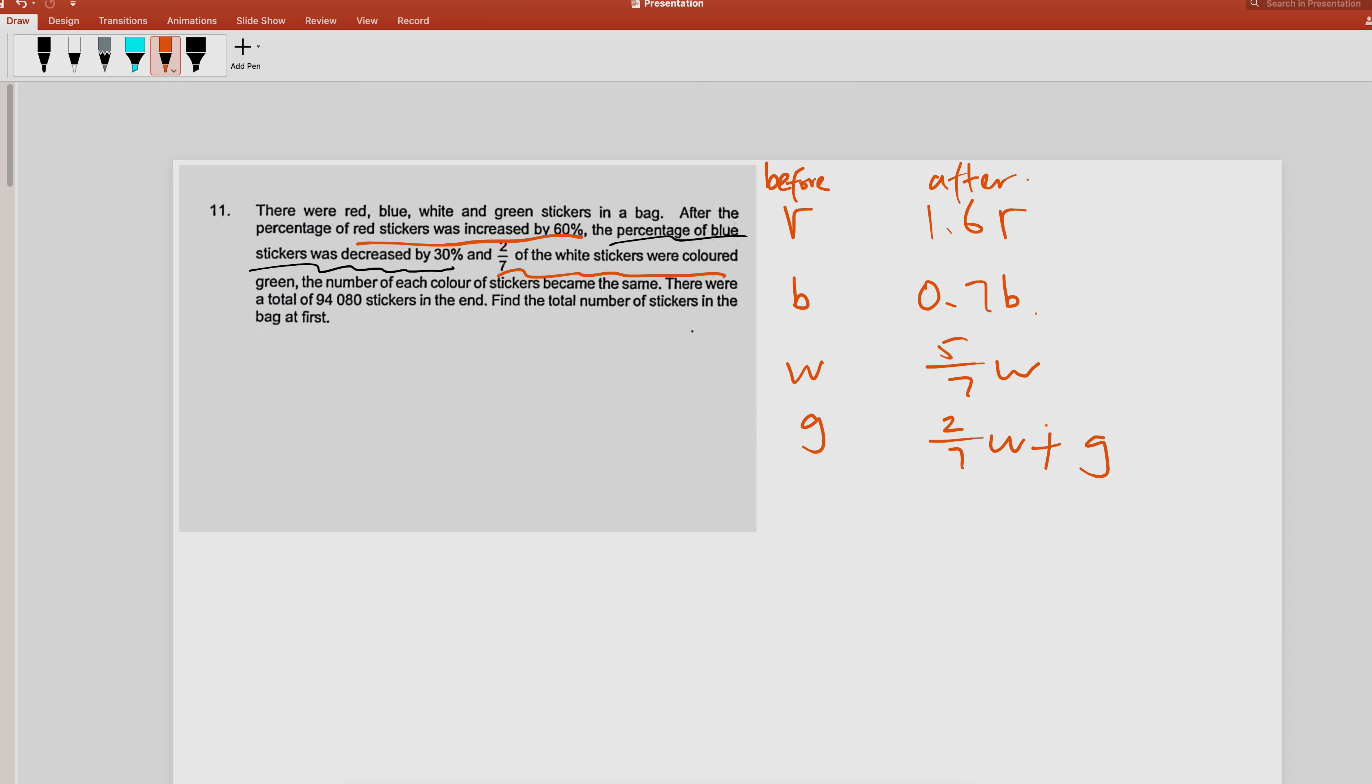When they happen to be the same, the total in the end is 9408. If four of them are the same, so 9408 divided by 4, can you find out how much one of them is? Because all of them end up with the same amount.